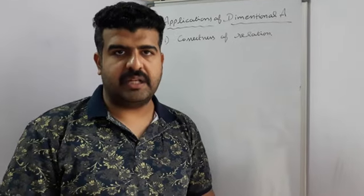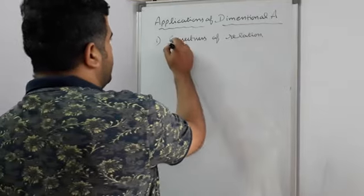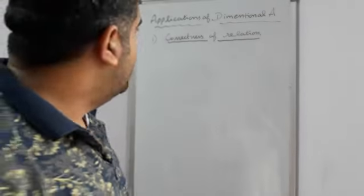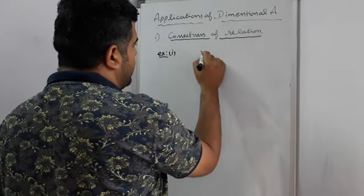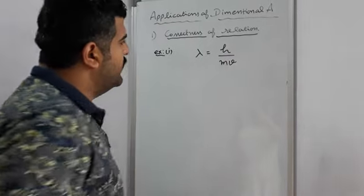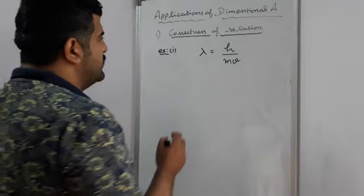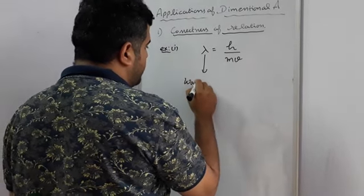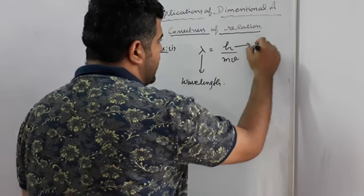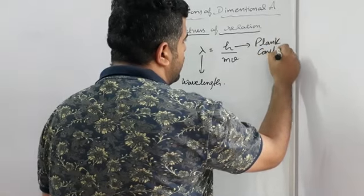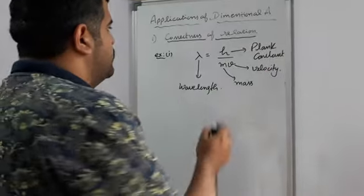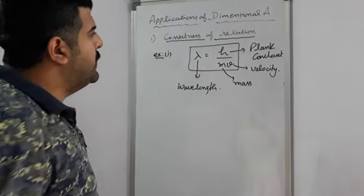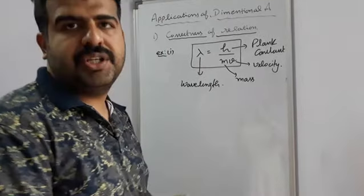In today's lecture we will see the applications of dimensional analysis. The first application is to check the correctness of relations. Example 1: λ = h/mv. This is the most important relation, where λ is wavelength, h is Planck's constant, m is mass, and v is velocity. With the help of dimensional analysis we check the correctness of this relation.